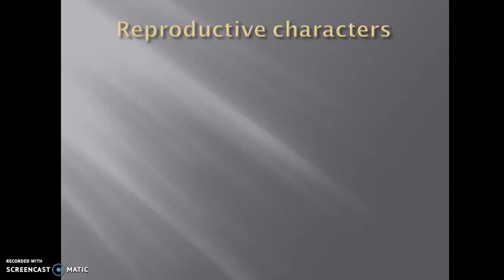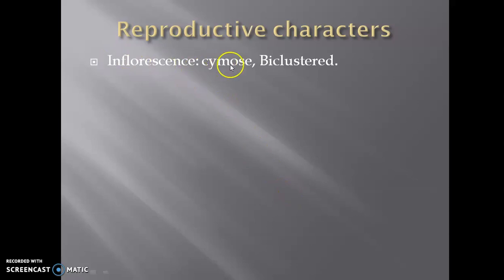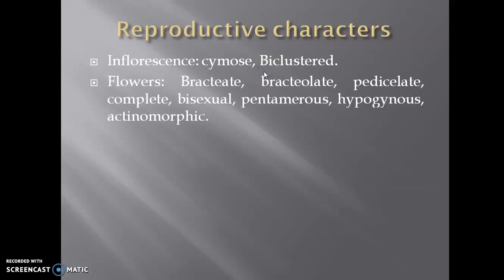Regarding the reproductive characters, the inflorescence is either cymose or bicluster type. The flowers are bractiate, bracteolate, pedicellate, complete, bisexual, pentamerous, hypogynous and actinomorphic.